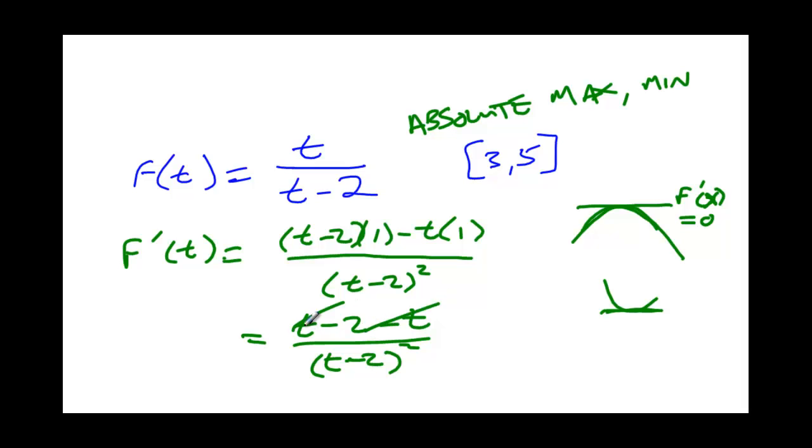t minus t, you can see those are going to go away. I'm left with just the negative 2 on top. I'm already asking myself what makes 0 out of the top? There is no variable. Negative 2 will never be 0. There is no critical point for the numerator equals 0. But down below, there is a critical point at t equals 2. This is really important to know that this is a critical point.